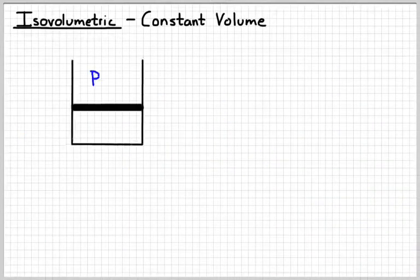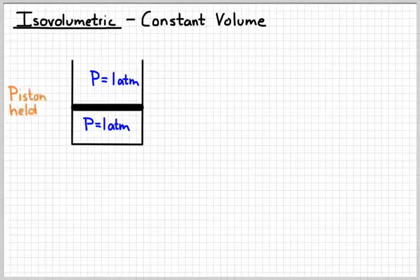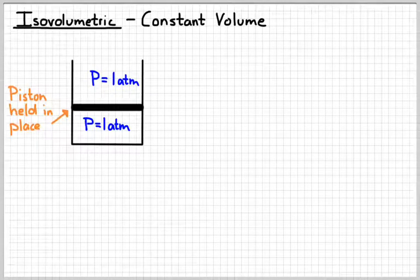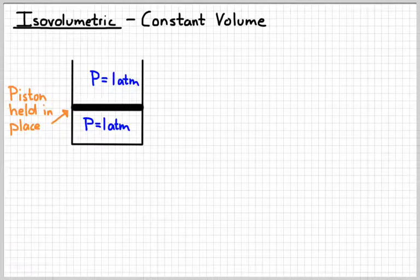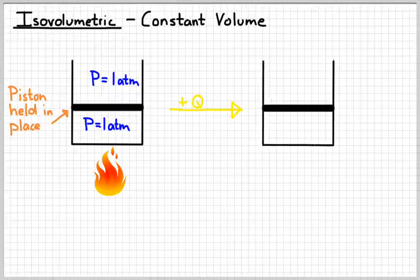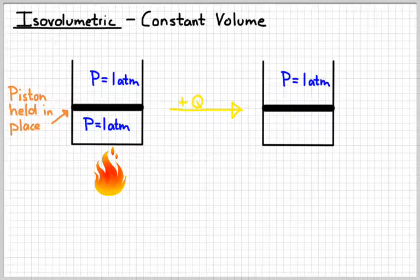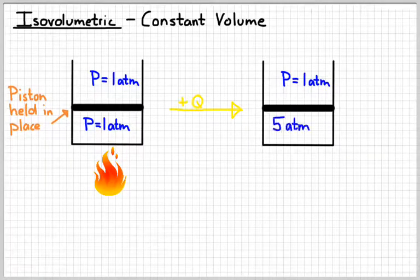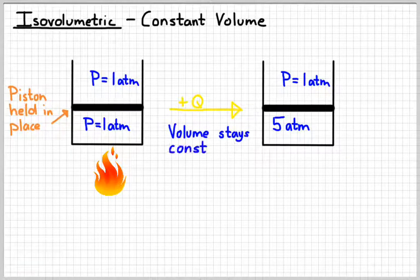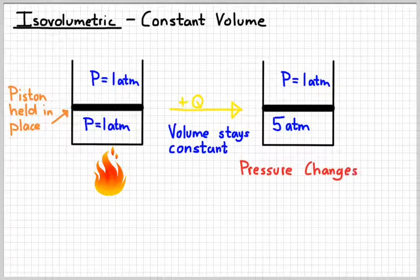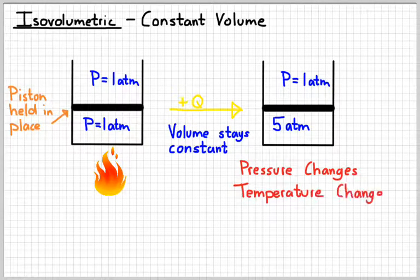An isovolumetric process, volumetric sounds like volume, means we have a constant volume. In this case, we would modify our cylinder and piston setup. This time we're going to hold the piston in place. That way, when we add heat, the piston's not allowed to rise, and so it remains in place. And so that's going to cause the pressure inside to increase. Volume's going to stay the same. That's also going to cause the temperature to change.